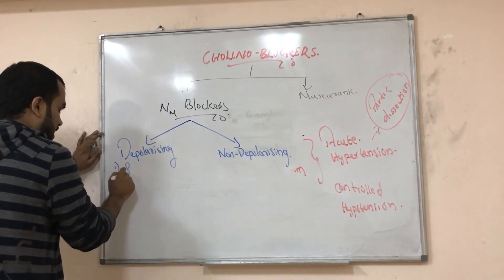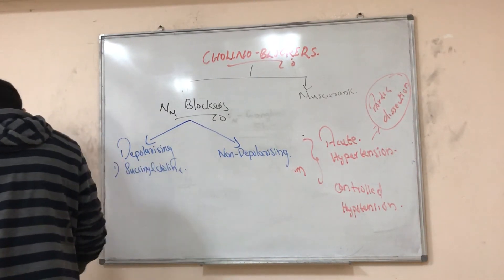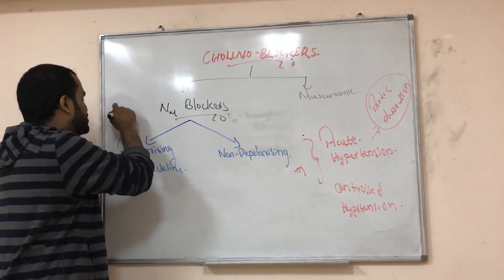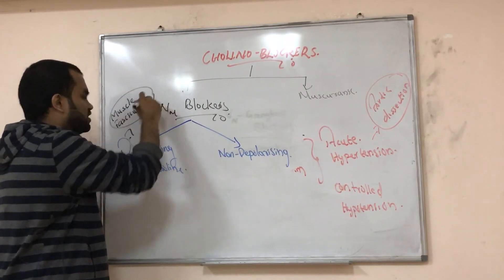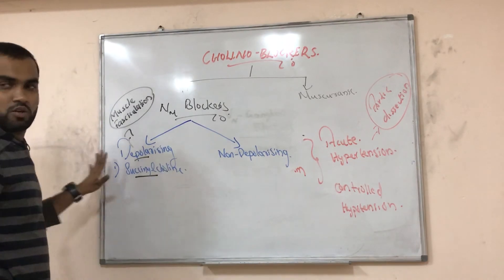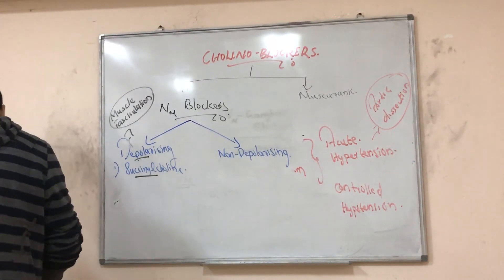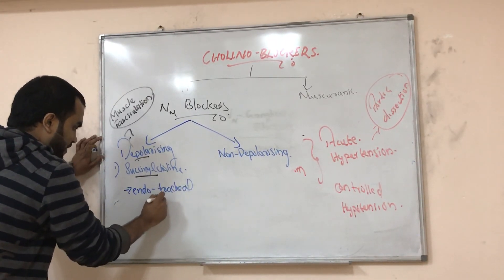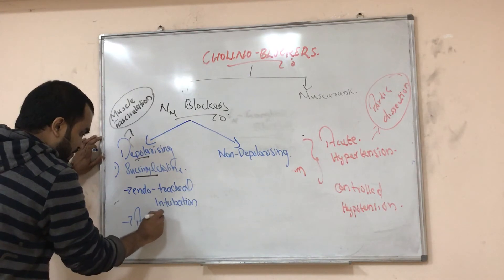Depolarizing blockers include succinylcholine. The meaning of depolarizing — as discussed in the previous video — is that they use sodium ions. In exam questions, you will see that they cause muscle fasciculation, or twitching of the muscle. Succinylcholine is used in endotracheal intubation, that is for artificial ventilation.